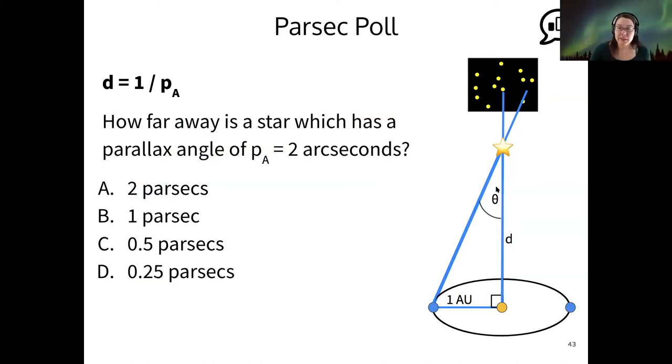So thinking about this equation for distance in parsecs, if I had a parallax angle of two arcseconds, how far away would that star be in parsecs? The C's have it, half of a parsec away is exactly right. So if we take one divided by two arcseconds, we get 0.5 parsecs. So pretty simple equation to use, handy dandy.